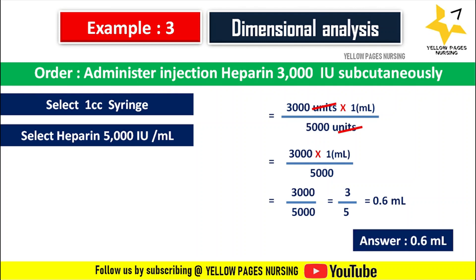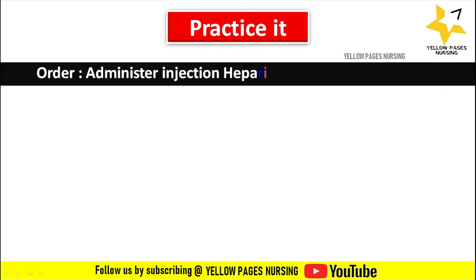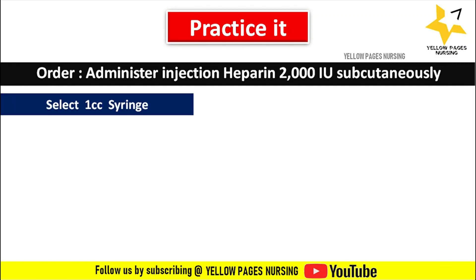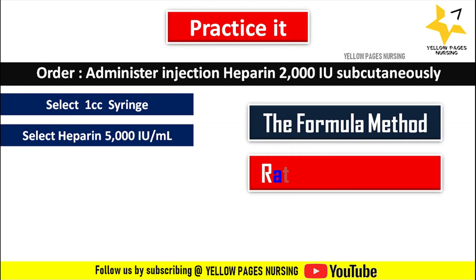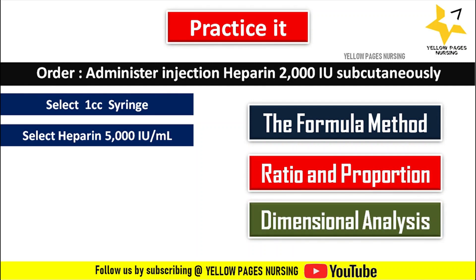Next comes a practice problem. The doctor's order is: administer injection heparin 2000 international units subcutaneously. Select a 1 cc syringe and heparin 5000 international units per ml. You can calculate the answer using the formula method, ratio and proportion method, and dimensional analysis, and mention your answers in the comment box.